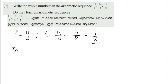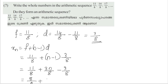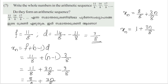So xn is equal to f plus (n minus 1) into d. Here f1 is 10 by 8, and d is 3 by 8. So xn equals 10 by 8 plus (n minus 1) into 3 by 8, which gives 10 by 8 plus 3n by 8 minus 3 by 8. Simplifying, 10 minus 3 gives 7, so xn is equal to (1 plus 3n) by 8, that is xn equals (1 plus 3n) by 8.